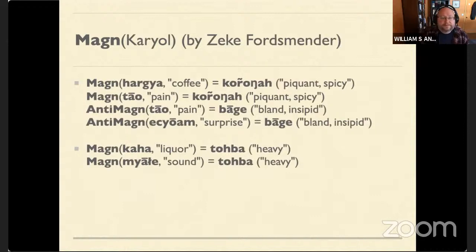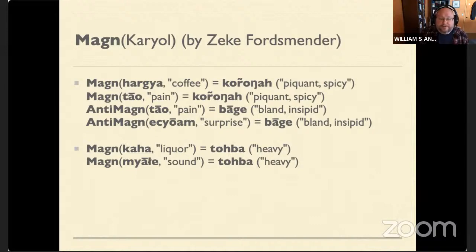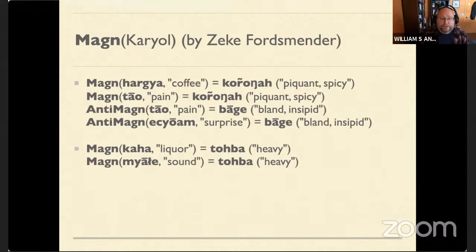Zeke Fordsminder's Cariol has some nice examples. We don't have tea, but we do have coffee. Strong coffee in that language is 'koronga' — piquant or spicy. The same term is used for intense pain. Many languages don't have core root vocabulary to describe pain only, but references to fire are common, so this seems allied with that. 'Baga' — bland or insipid — is used as anti-intensity for pain, but can also be anti-intensive for surprise. For strong booze, Cariol chose a different term, 'tokhba,' which is also used for intense or loud sounds — heavy.